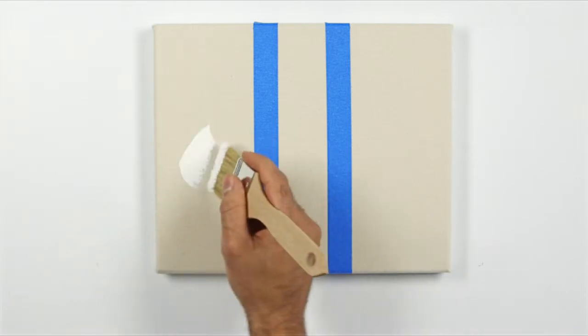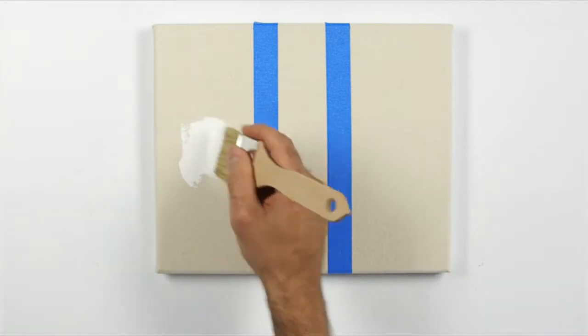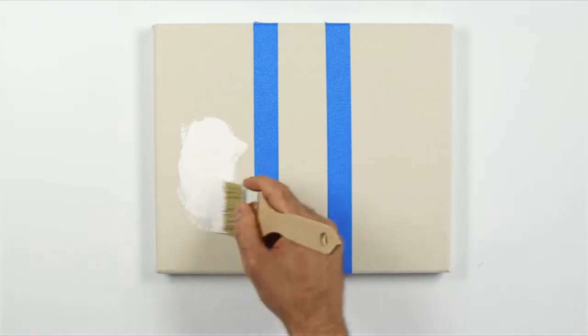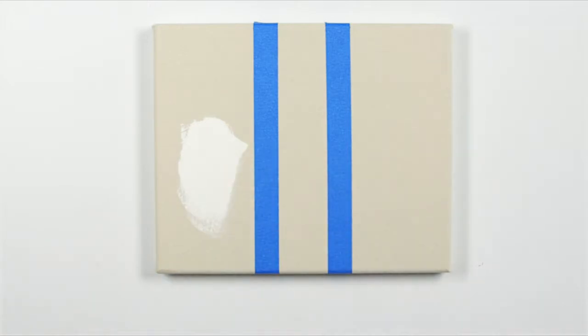First I'm using Winsor & Newton Professional Acrylic White Gesso, which is made from a quality acrylic resin and is a highly pigmented primer that could be used as a surface preparation for both acrylics and oil.